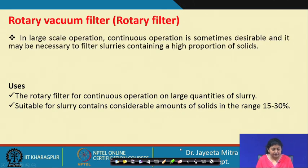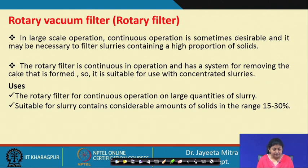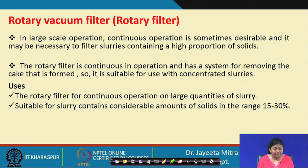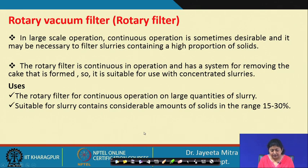First we will see the rotary vacuum filter, also called the rotary filter. In large scale or continuous operation, it may be necessary to filter slurries containing a high proportion of solids. The rotary filter is a continuous system and has a mechanism for removing the cake that forms over the surface of the drum. It is suitable for use with concentrated slurries, for continuous operation on large scale quantities of slurry at quite a high rate.